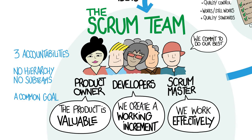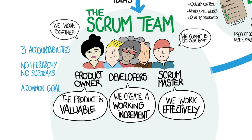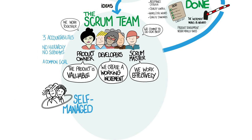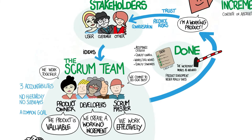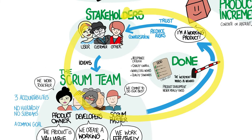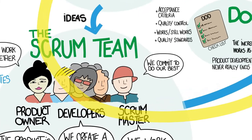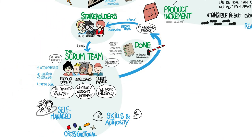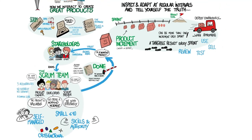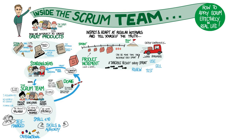Developers are accountable for creating the increment, the product owner is accountable that the increment is valuable, and the scrum master is accountable that people can work and collaborate effectively. The scrum team solves the problem together — they organize and manage themselves. A scrum team is cross-functional, meaning it has all the skills and authority necessary to transform incoming ideas into something that is done and valuable, including making decisions about the product. Typically a scrum team has 10 people or less. If the team gets larger, effectiveness usually declines. Conversely, a small team may not have all the skills needed, especially if someone goes on vacation or gets sick.